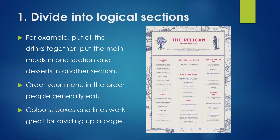Tip number one is to divide your menu up into logical sections. One way is to group together similar items of food. If you look at this example menu here, you can see all the soups and salads are grouped together in that section, all the sweets or the desserts are grouped together in that section. So group together similar items of food.